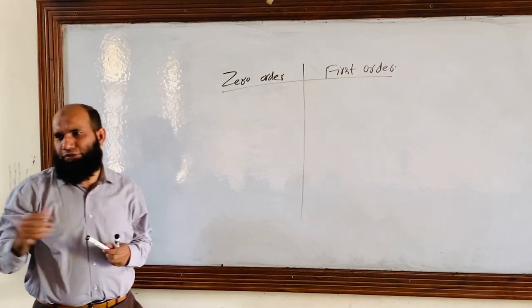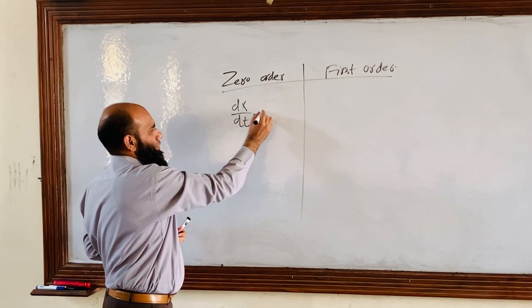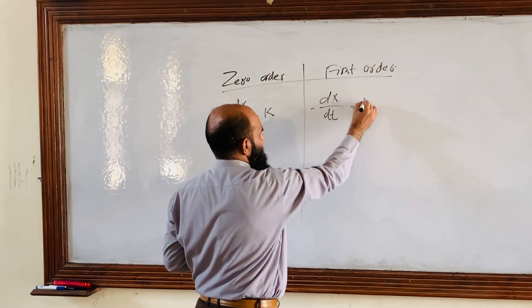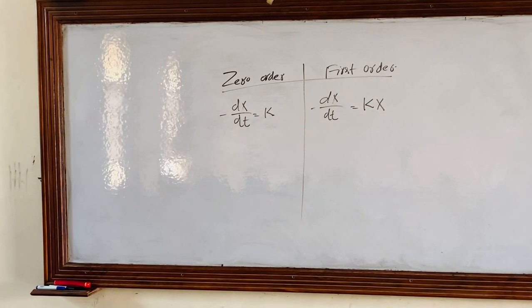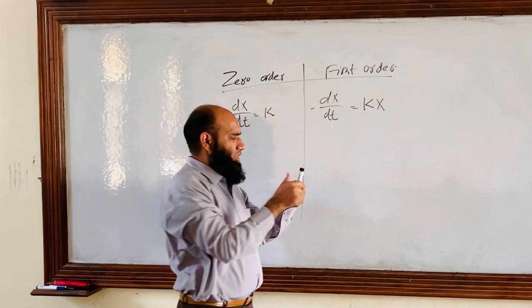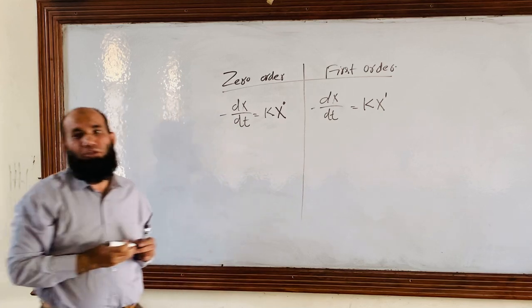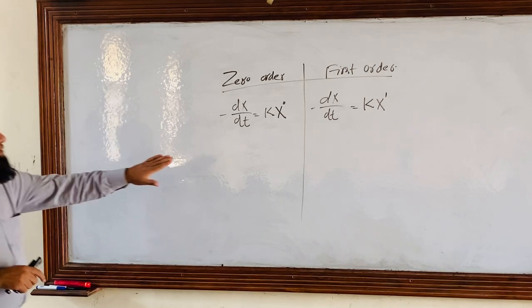Let's start with the simple rate equation: dx/dt equals k with a minus sign, and dx/dt equals negative kx. Is there any difference? The difference is the addition of x — here x has a power of one, and here the power is zero. x to the power zero is one, and x to the power one is x.